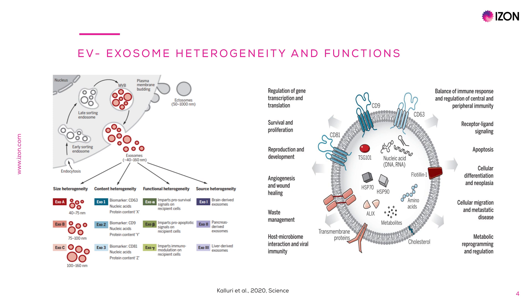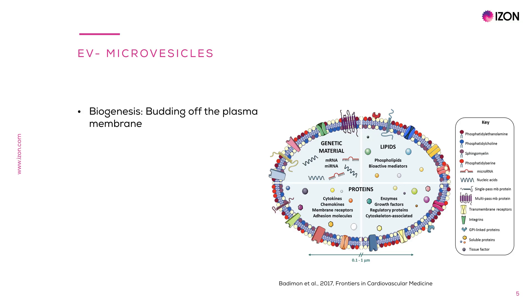Another important and second most studied EV type are microvesicles. Microvesicles are formed by budding of the plasma membrane, a releasing process that is driven by calcium-dependent signaling, activity of several enzymes, cytoskeleton remodeling and externalization of specific phospholipids.